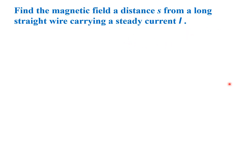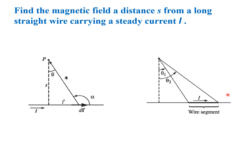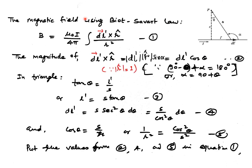We apply the Biot-Savart law to find the magnetic field at a distance s from a long straight wire carrying a steady current I. We have a long wire with current I flowing through it, and we want to find the magnetic field strength at point P, which is at a distance s. We take a small line segment making initial angle θ₁ and final angle θ₂, then write B = μ₀I/4π ∫ (dl' × r̂)/r².